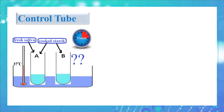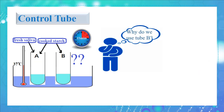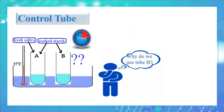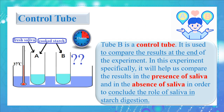Why do we use tube B if it does not contain saliva? Tube B is the control tube. It is used to compare the results at the end of the experiment. In this experiment specifically, it helps us compare results in the presence and absence of saliva in order to conclude the role of saliva in starch digestion.